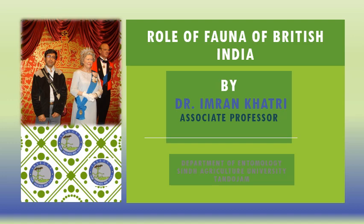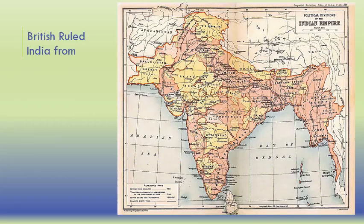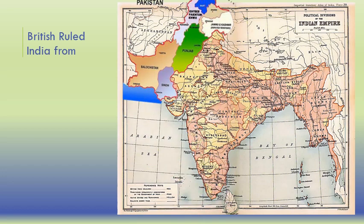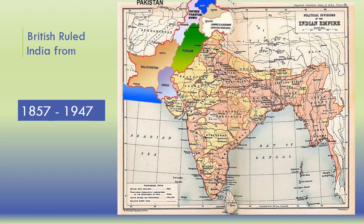This is the map of the Indian Empire under British rule from 1857 to 1947. Pakistan was also included in this. I would like to show you a glimpse of the Queen of the British Raj.